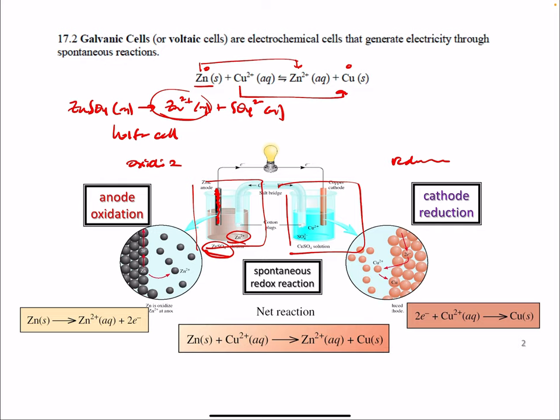On the other side, we have copper ions as copper sulfate. Same thing, it's soluble, it'll dissociate to give copper 2+ ions. And we have a copper electrode. So the zinc is the anode, the copper is the cathode.